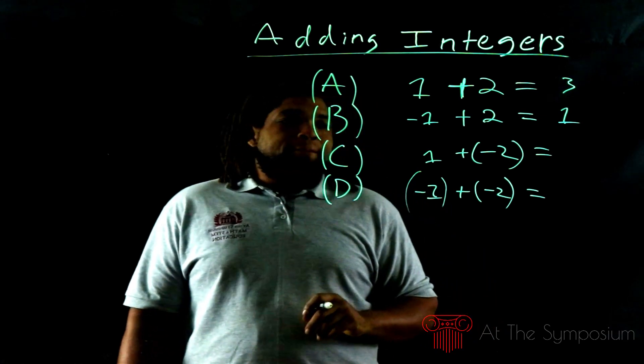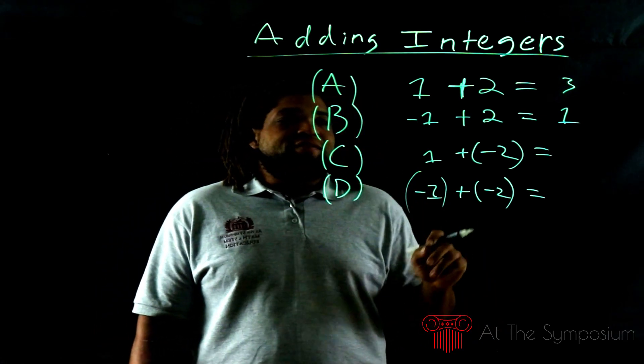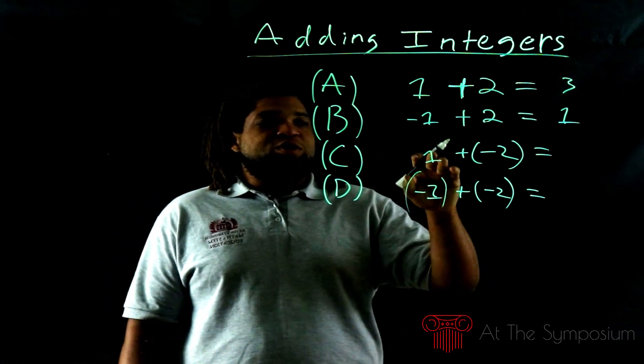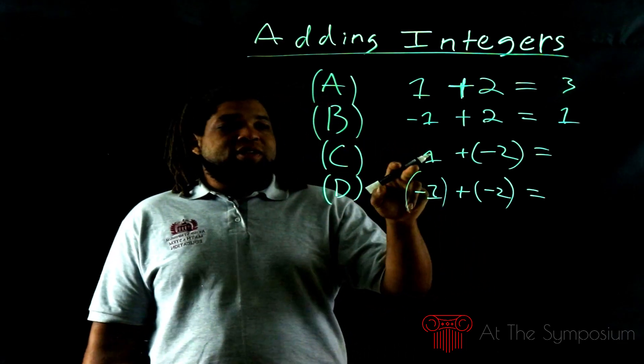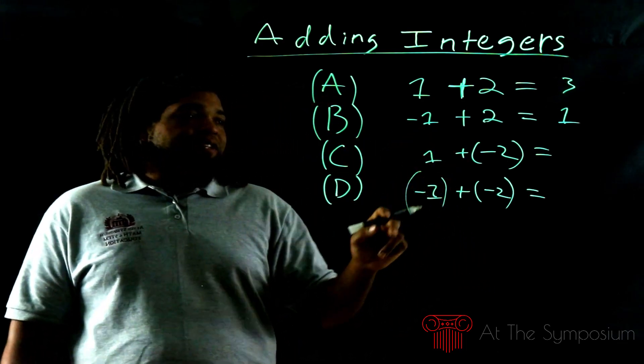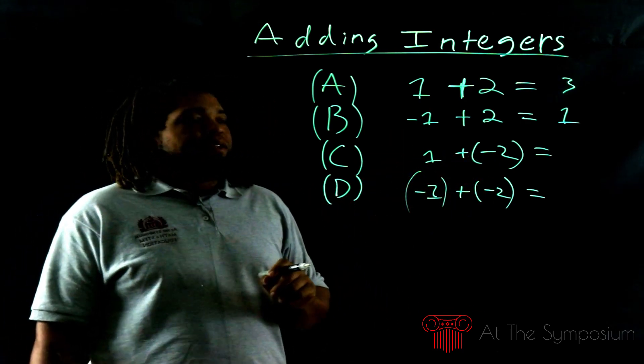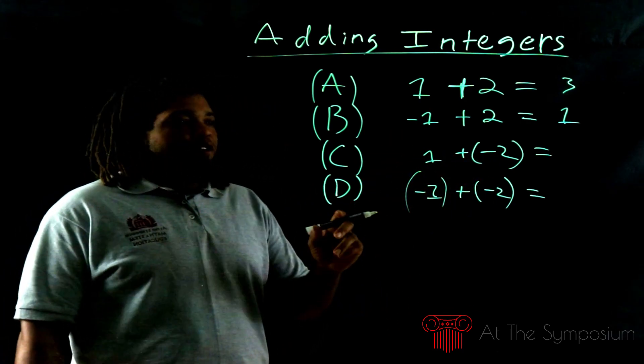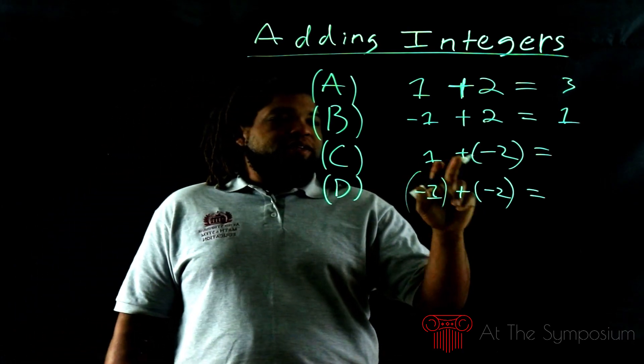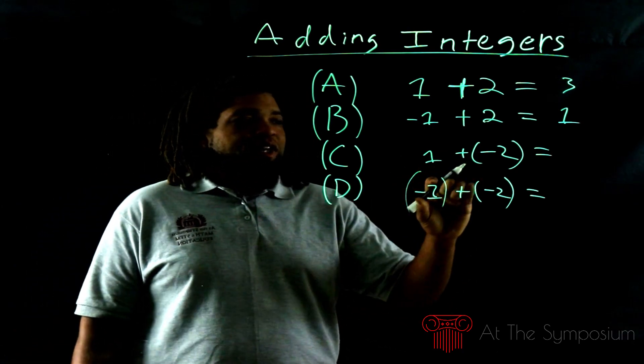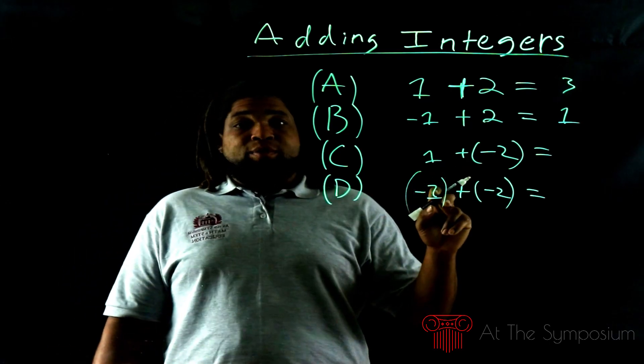How about C? 1 + (-2). You see that I have the same numbers. The only difference between B and C is I switched the negative sign. So now the negative sign belongs to the 2 and not the 1. Let's see if that changes anything. How do we deal with this when we have two signs next to each other? Usually this is going to be written in parentheses.